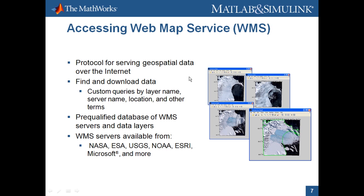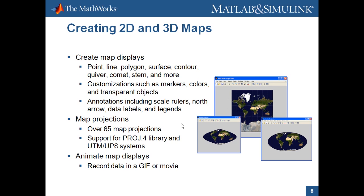Now that we've seen a quick example of accessing WMS servers, let's look at the next key feature: creating 2D and 3D maps. Mapping Toolbox supports displaying point data, line data, polygons, and imagery. On the right is the blue marble image downloaded via WMS, rendered in many different map projections. One key thing Mapping Toolbox provides is the ability to manage map distortions with over 65 map projections. As part of creating maps, you can annotate and customize them with markers, colors, scale rulers, and north arrows. We'll see this in more depth in the oil spill demo.